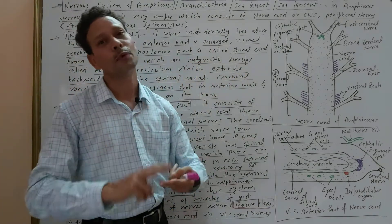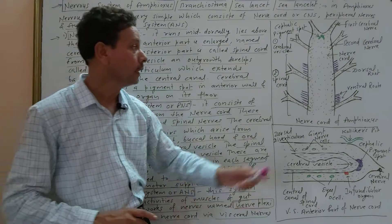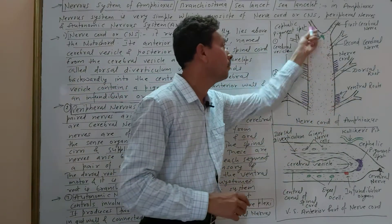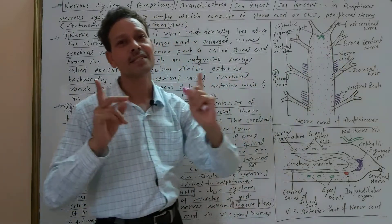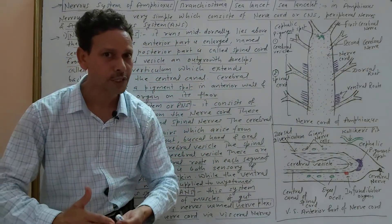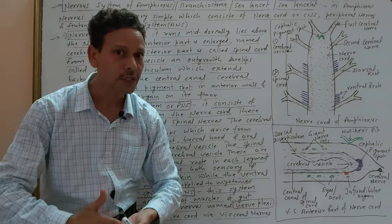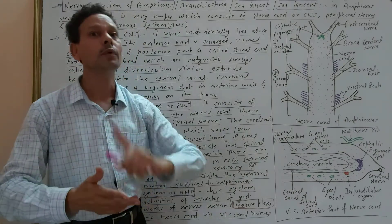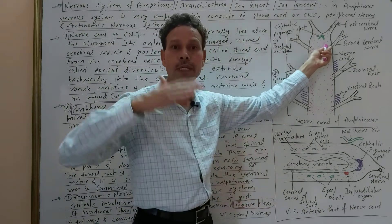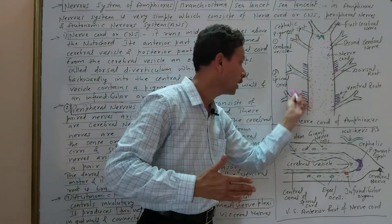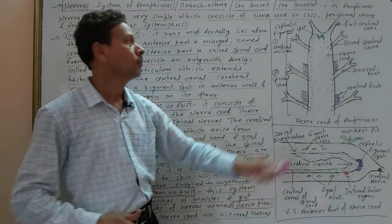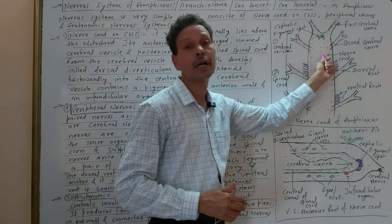The peripheral nervous system consists of nerves of two types. Nerves arising from the spinal cord are spinal nerves, and nerves arising from the cerebral vesicle are cerebral nerves. First we will discuss the cerebral nerves.